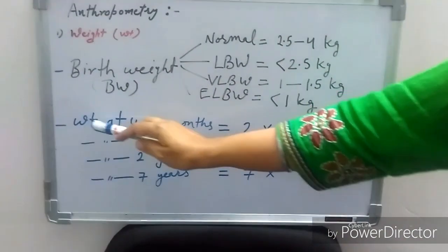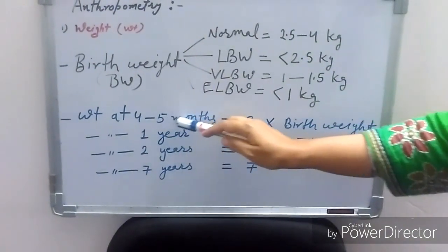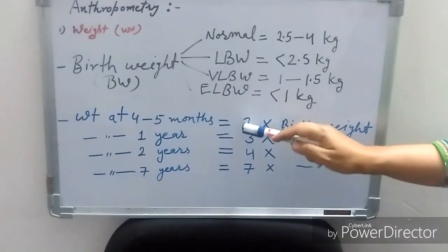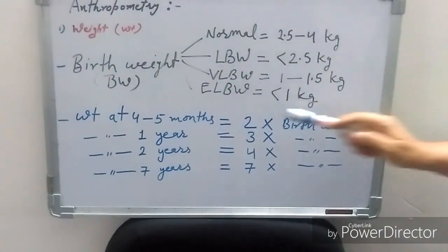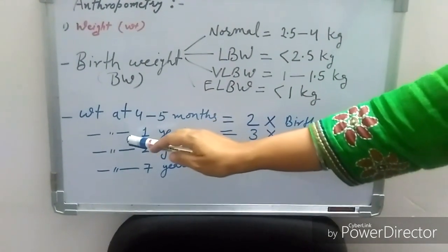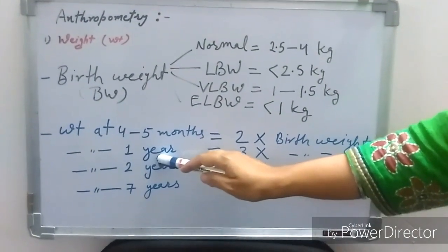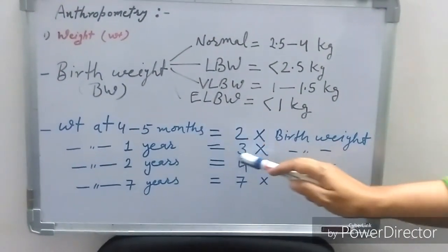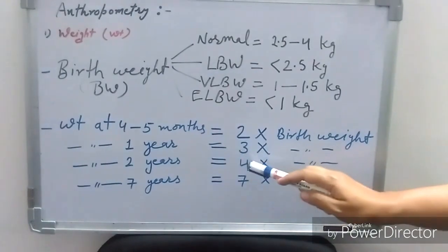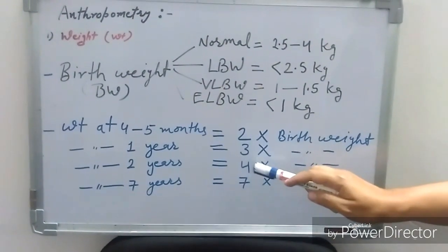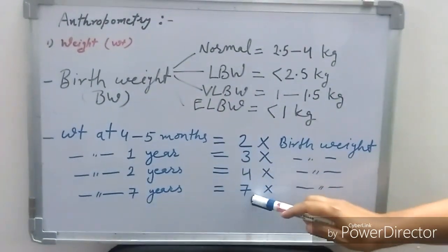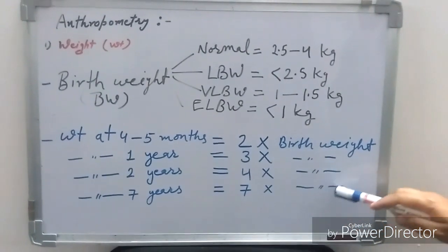Birth weight doubles at 4 to 5 months of age, so 2 times the birth weight is acquired at the age of 4 months and 3 times birth weight at 1 year of age. At 2 years birth weight quadruples, 4 times, and at 7 years, 7 times birth weight is 21 kilograms.